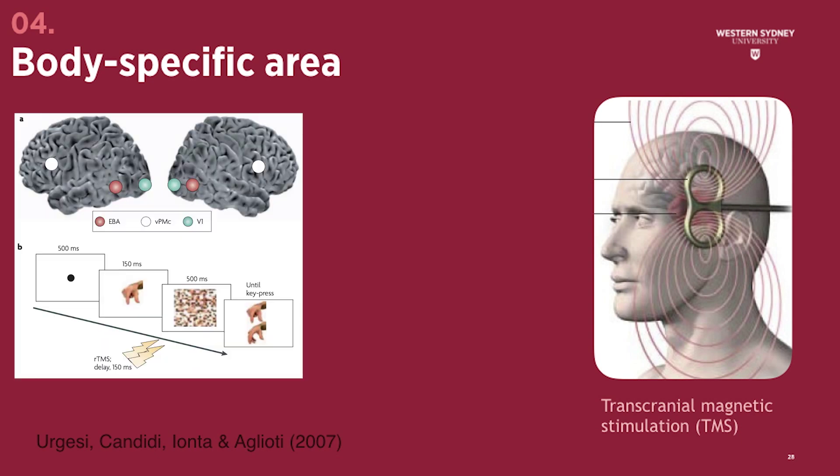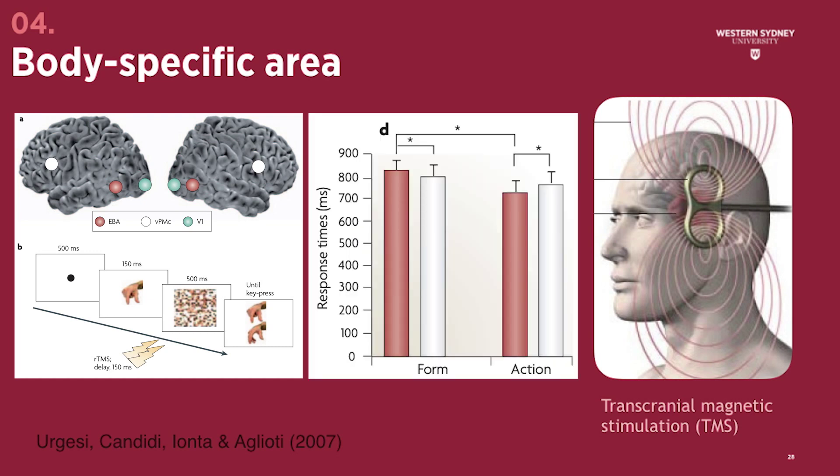Subjects were shown images of various hands engaged in different actions — grasping, twisting, pulling, and so on. They found that when TMS was applied to the FBA, judgements about the actions were disrupted more so than judgements about the shape of the hands. This seems to imply that the FBA may be involved not only in recognising others based on their body shape, but possibly more importantly, in analysing the actions that the bodies are engaged in.